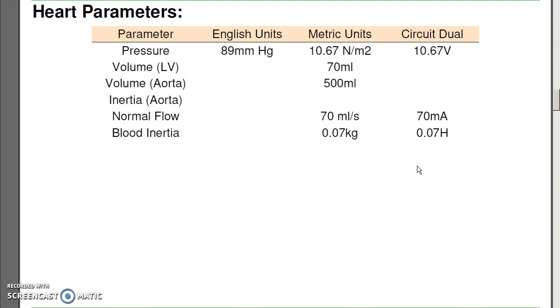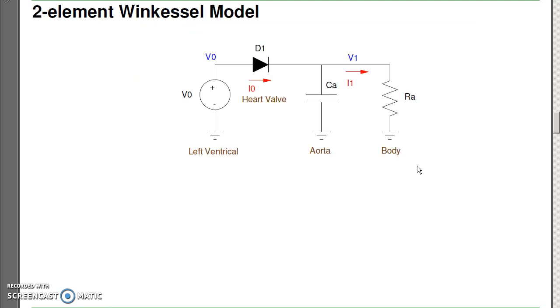Now, to model this, I need to come up with realistic numbers. The pressure for the heart is essentially the voltage that we'll be applying. The circuit equivalent is 10.67 volts. The normal flow of blood is 70 milliliters per second, which we'll model as 70 milliamps, where 1 milliamp means 1 milliliter. And the inertia of the blood is 0.07 kilograms, which we'll model as a 0.07 Henry inductor. Now, to tune the circuit, I need to add the capacitance and resistance.